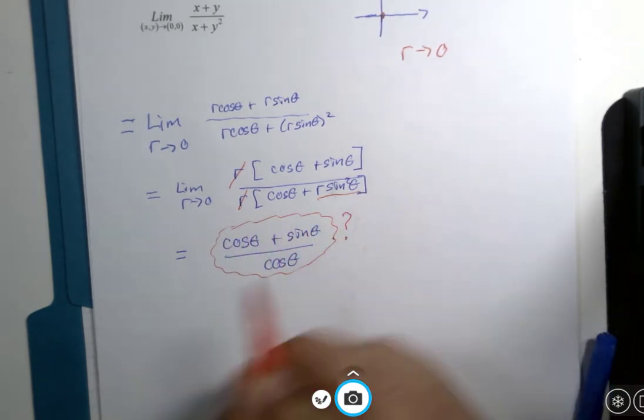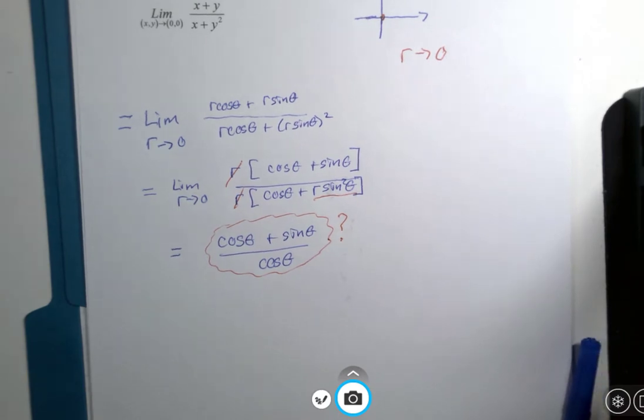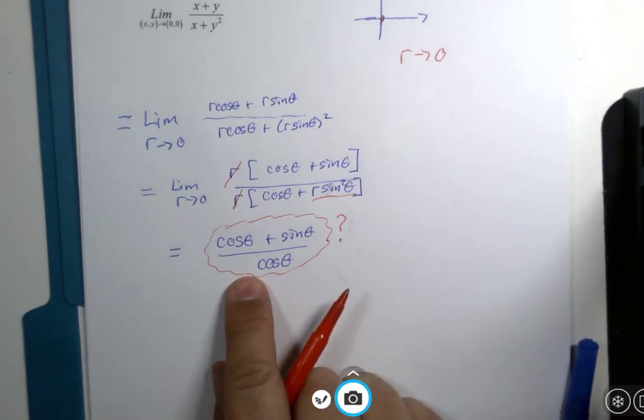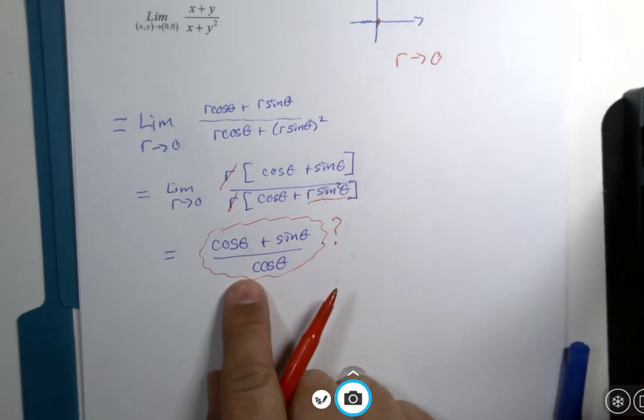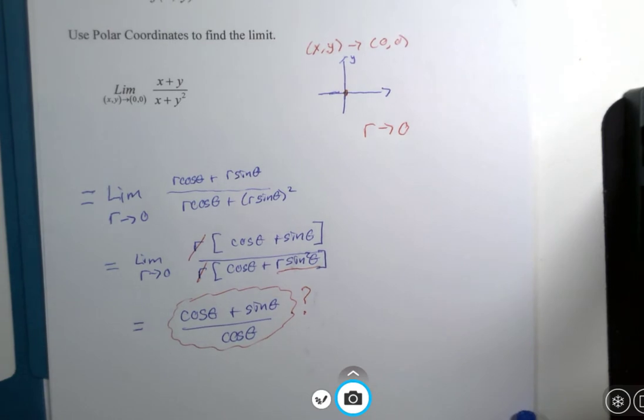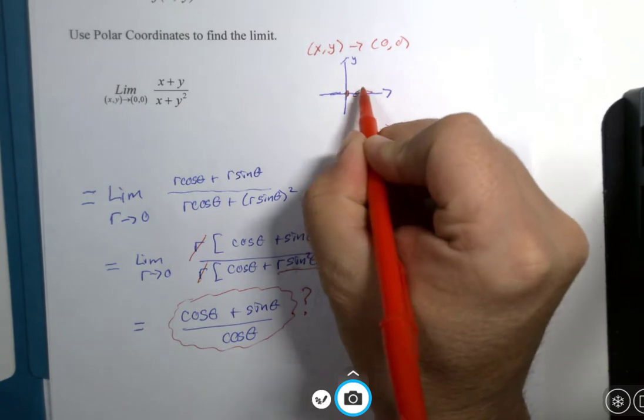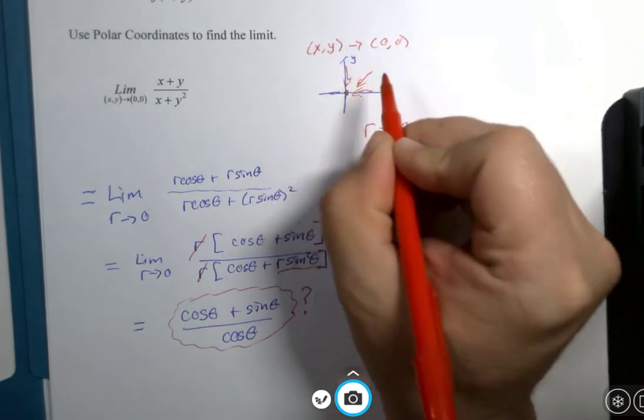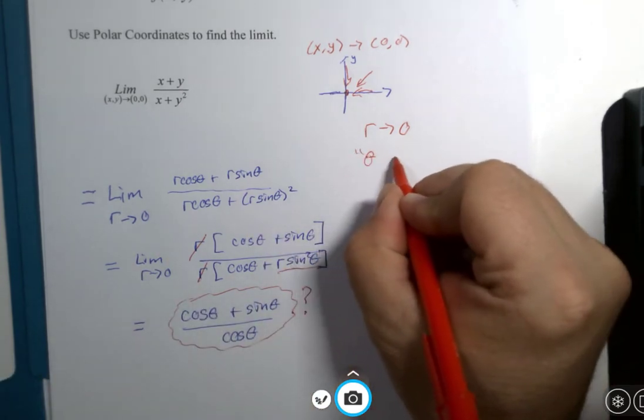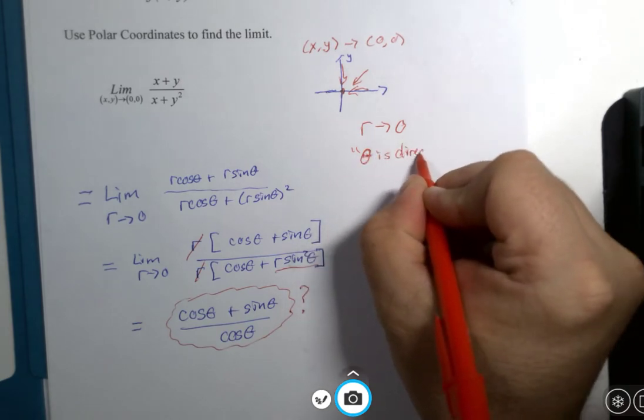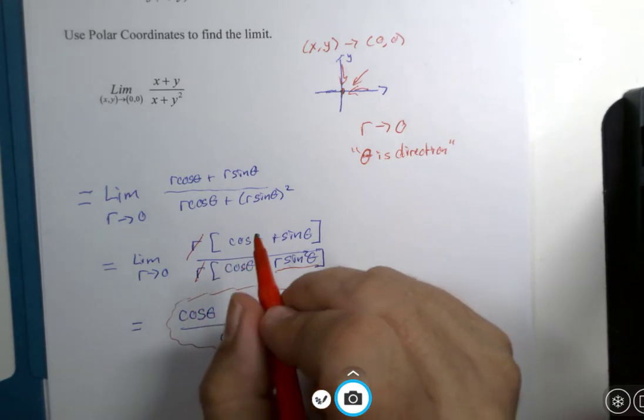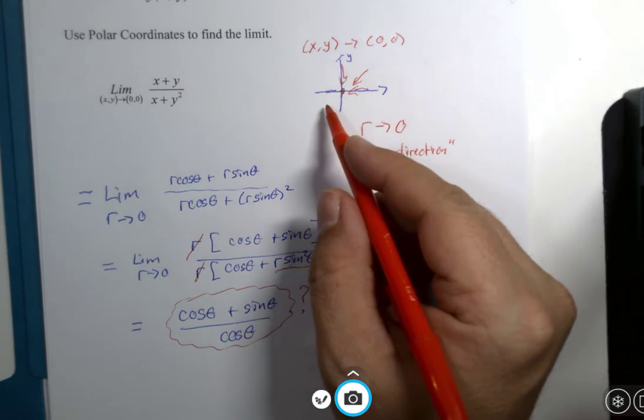So I'll put a question mark here. That doesn't look like any limit answer I've ever seen before. r became zero, but I have this expression here that has thetas in it still. And so I want to remind you what theta was all about when we were doing a polar limit. Theta represents how we approach the origin. Theta was our direction.